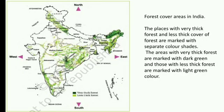This map shows forest cover areas in India. The places with very thick forest and less thick forest are marked with separate color shades. Areas with very thick forest are marked with dark green, and those with less thick forest are marked with light green.